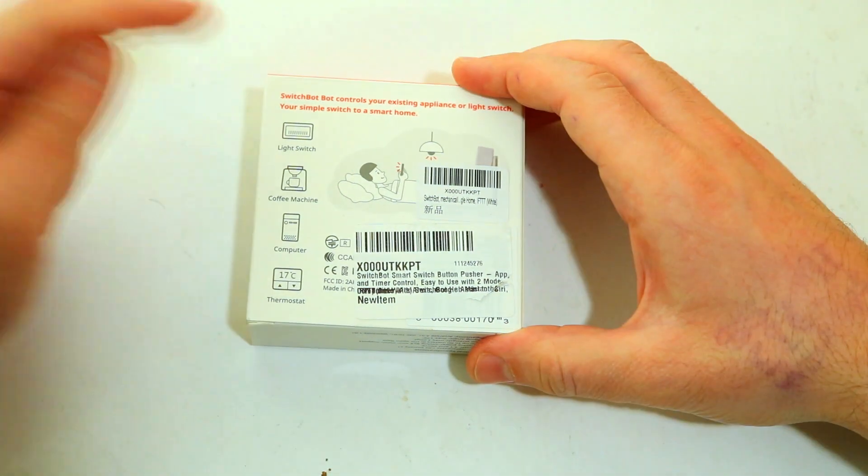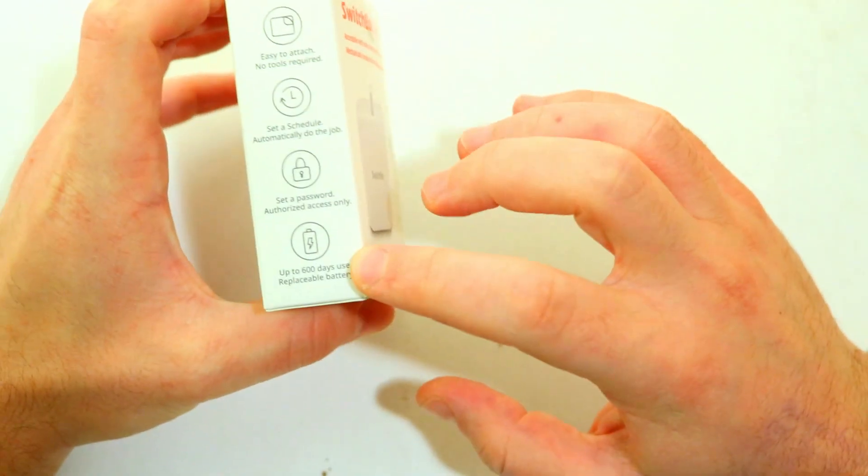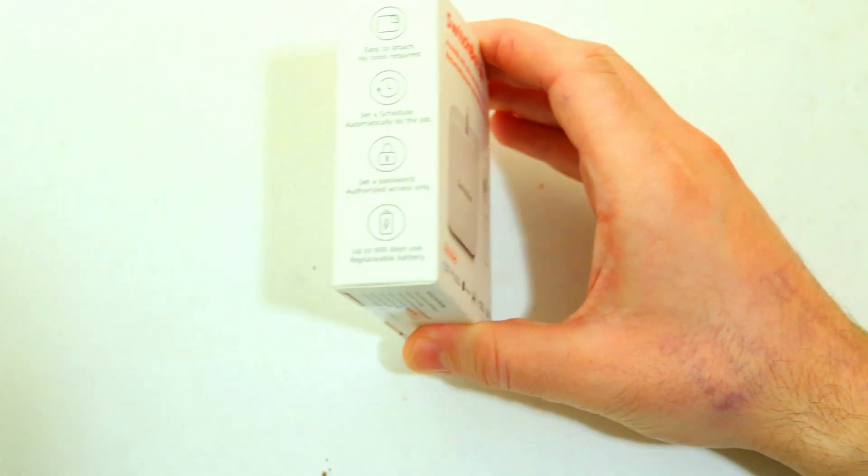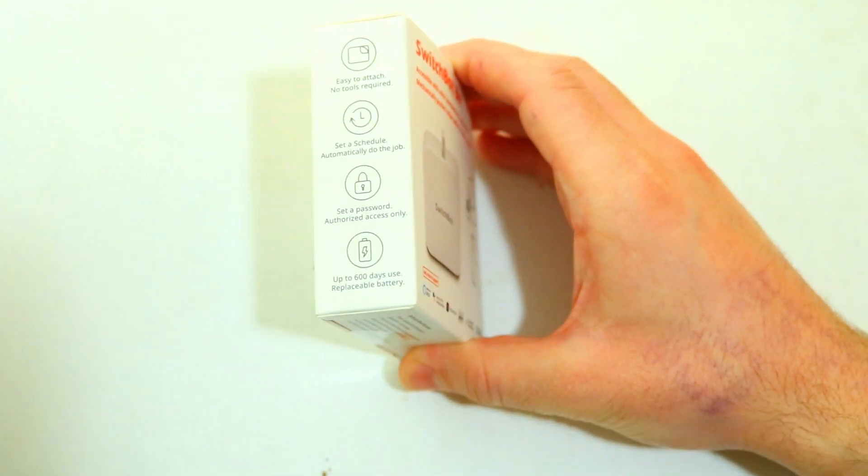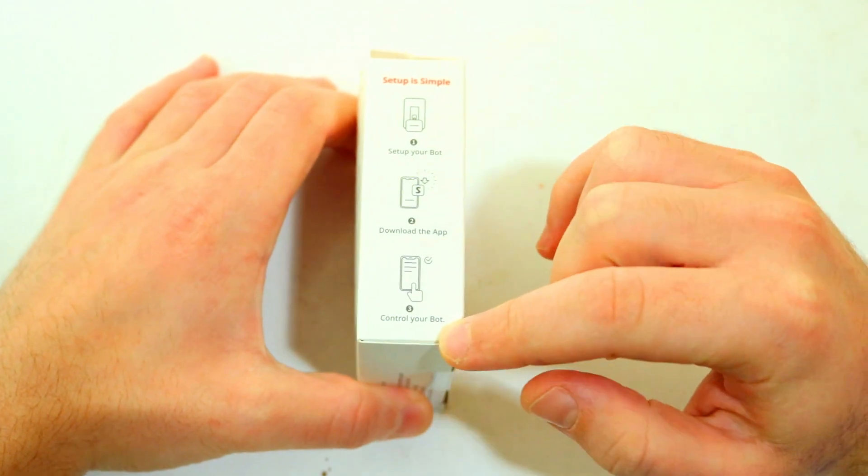On the back you've got a bunch of different examples they've put, so light switch, coffee machine, computer, thermostat. It's got a 600 day battery but it's replaceable which is really good to see. It means that you don't have to worry about the battery life finishing and having to get another device. And this side shows you how easy it is to set up.